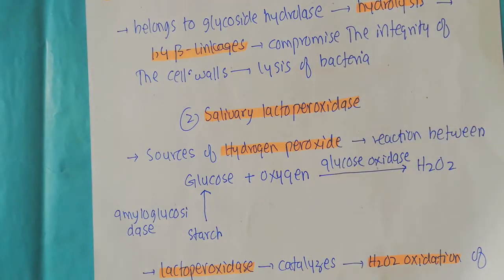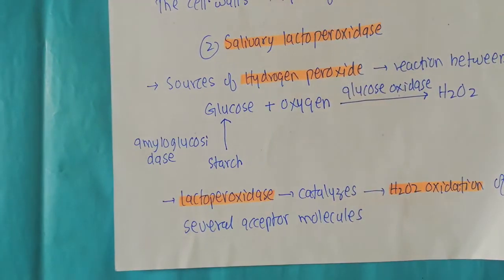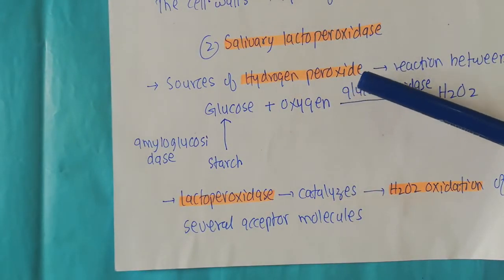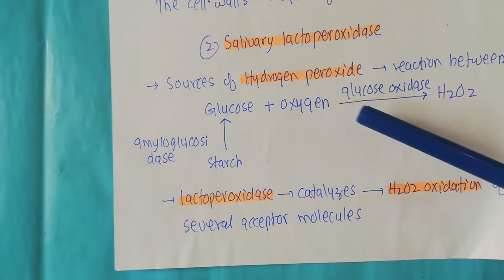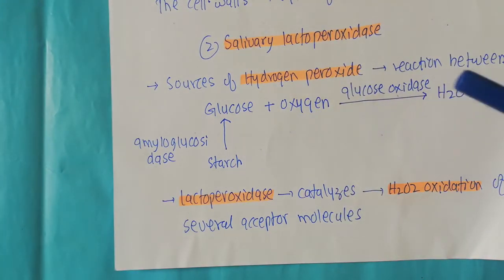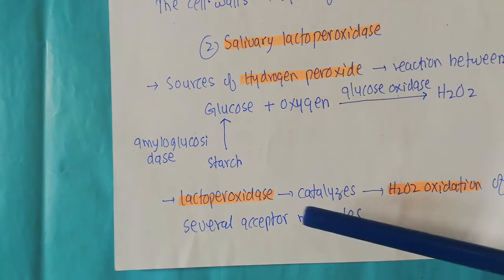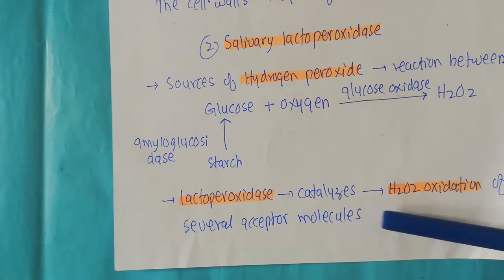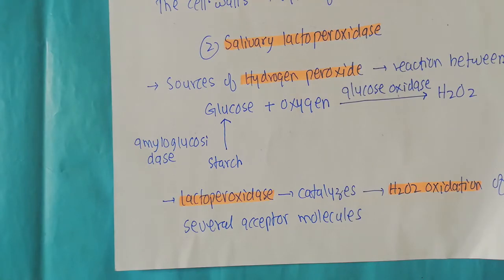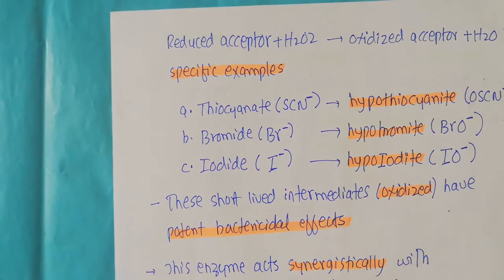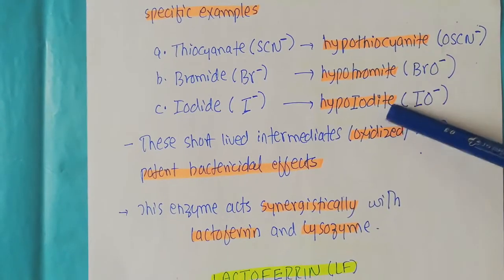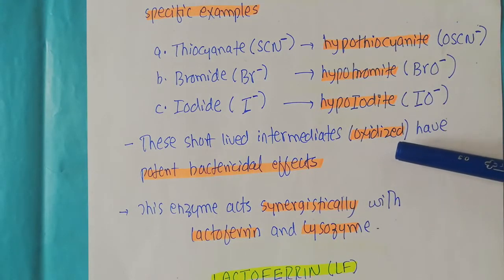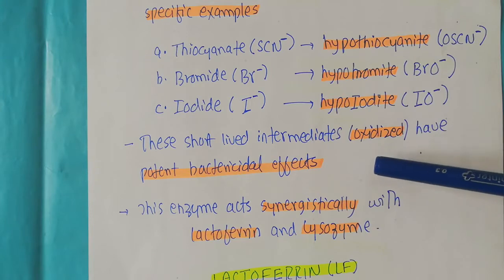We also talked about the salivary lactoperoxidase. When hydrogen peroxide is produced by the reaction of glucose and oxygen in the presence of the enzyme glucose oxidase, the lactoperoxidase catalyzes the oxidation of hydrogen peroxide with several acceptor molecules. The important examples we discussed were the production of hypothiocyanide, hypobromide, and hypoiodide — these short-lived oxidized intermediates have potent bactericidal effects.